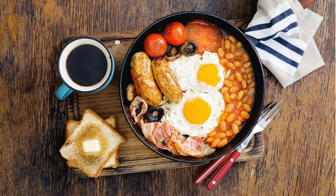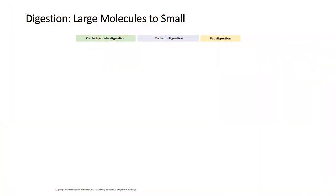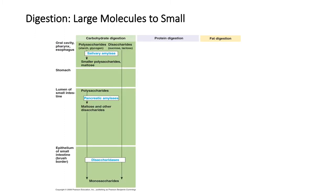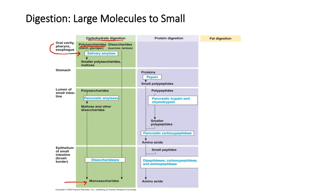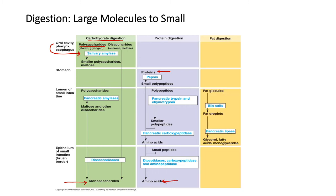Whenever we eat a meal or drink something, the body tries to get the nutrients it needs from that food or fluid. Most of the time those nutrients aren't available in their original form and need to be broken down. Carbohydrates start as polysaccharides, begin breaking down in the mouth by amylase, and are ultimately reduced to monosaccharides in the small intestine. Proteins begin digestion in the stomach and break down into amino acids. Fats are broken down into fatty acids and monoglycerides.